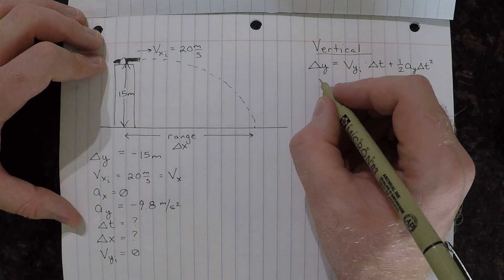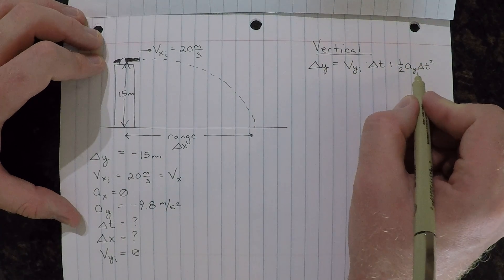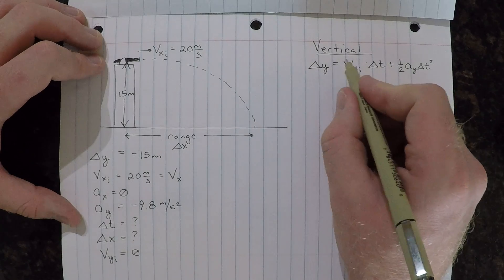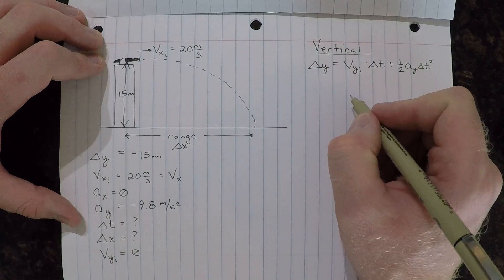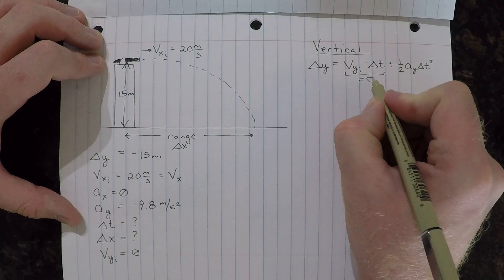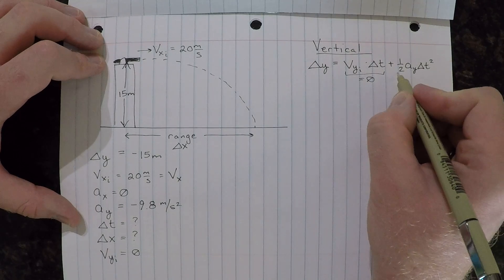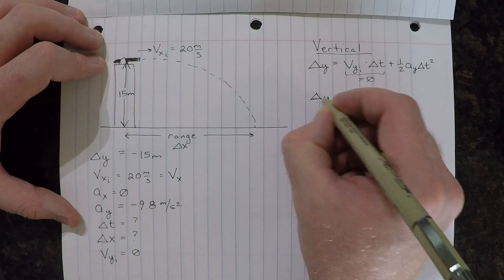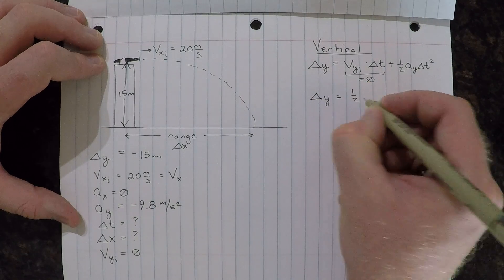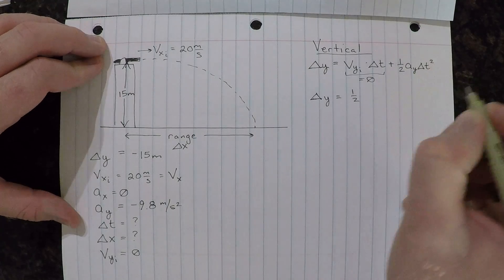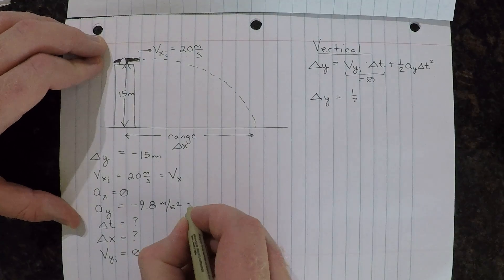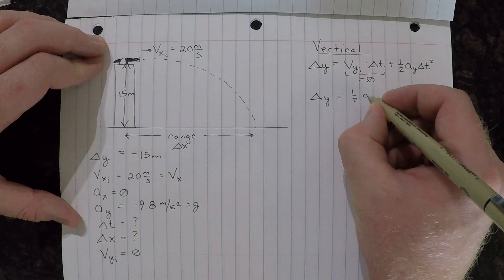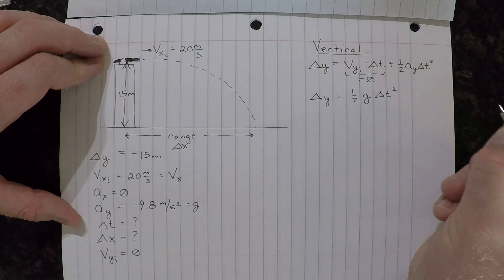Okay, let's simplify this a bit. Because we know that our initial vertical velocity is zero, this whole first term becomes zero, leaving us with just the second term in the equation. So delta y is equal to one-half acceleration in the y, which we'll call g, or negative 9.8, g delta t squared.